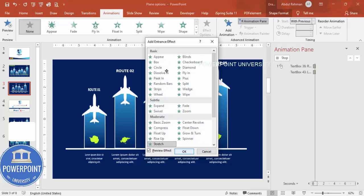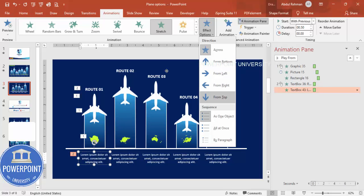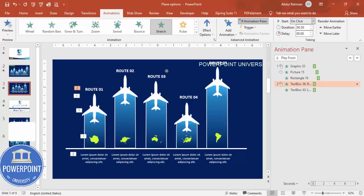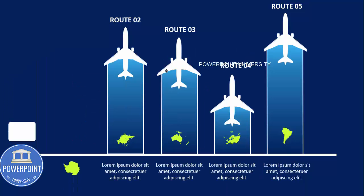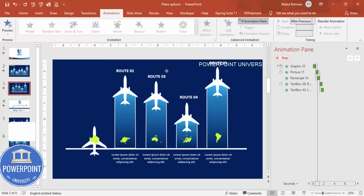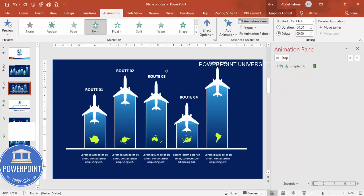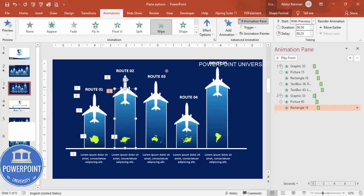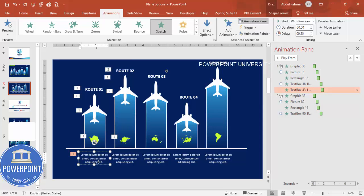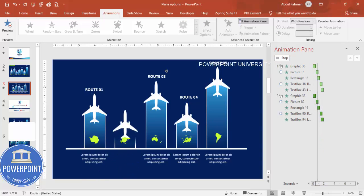Set the title text to come from the bottom and the detail text from the top. Set both to With Previous or After Previous depending on preference. Use the Animation Painter to quickly apply the same animation sequence to the remaining route options — click on the map, then the aeroplane, then the wave path, then each text element. Repeat for all options and the animation is complete.